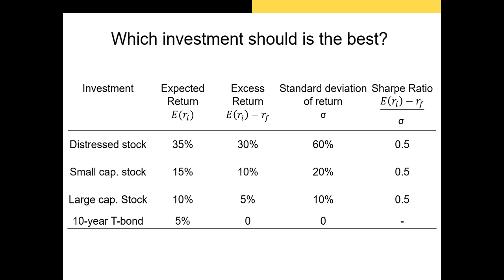However, in the past I've found that when I asked this question in class, a lot of my students will prefer the small-cap stock or the distressed stock. That desire to hold a riskier security, even though it has the same risk-adjusted return or Sharpe ratio, is indicative of your level of risk aversion. Some investors are more risk-averse while others are less risk-averse. I happen to be fairly moderately risk-averse — I'd probably prefer the small-cap stock or the large-cap stock.